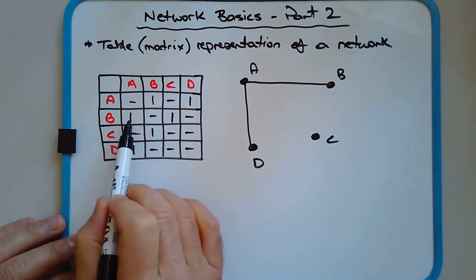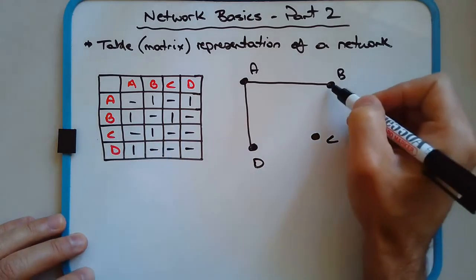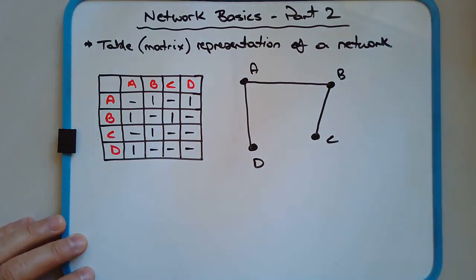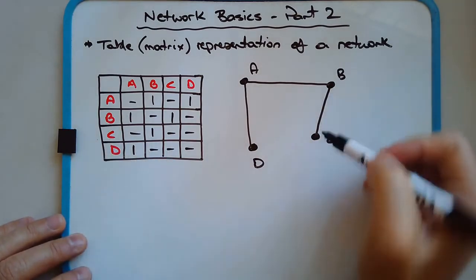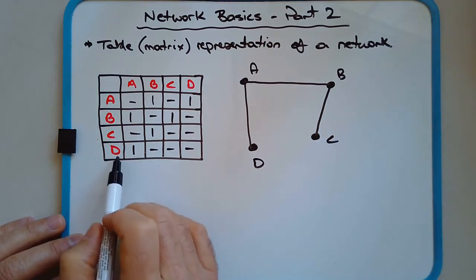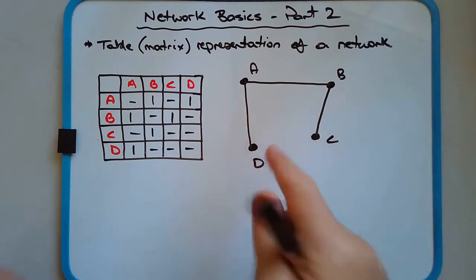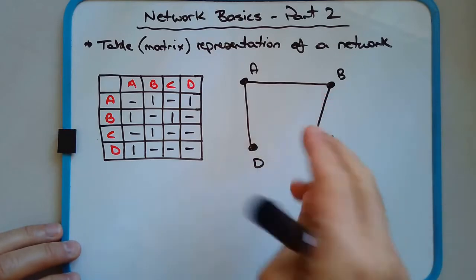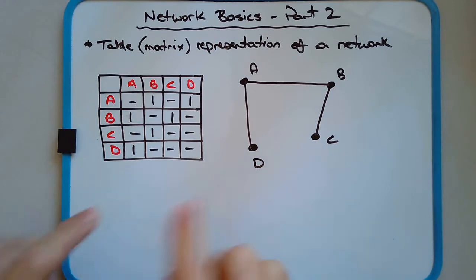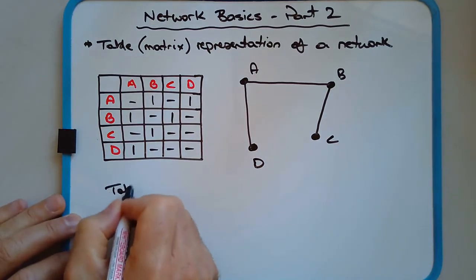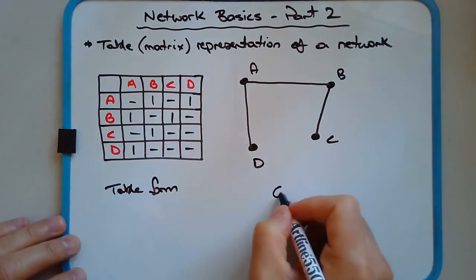In the second row, B–A is already listed, so we just add B–C. Third row: C–B is already done. Last row: D–A is already done. So this network or graph — when I say graph, I mean the diagram — is the representation of the network in table form. These two things represent the same network: one is in table form (sometimes called matrix form), the other is in graph form.